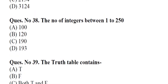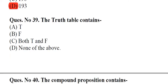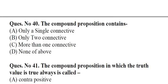Question number 38: The number of integers between 1 to 250. A. 100, B. 120, C. 190, D. 193. Question number 39: The truth table contains A. T, B. F, C. Both T and F, D. None of the above. Answer: C, Both T and F.